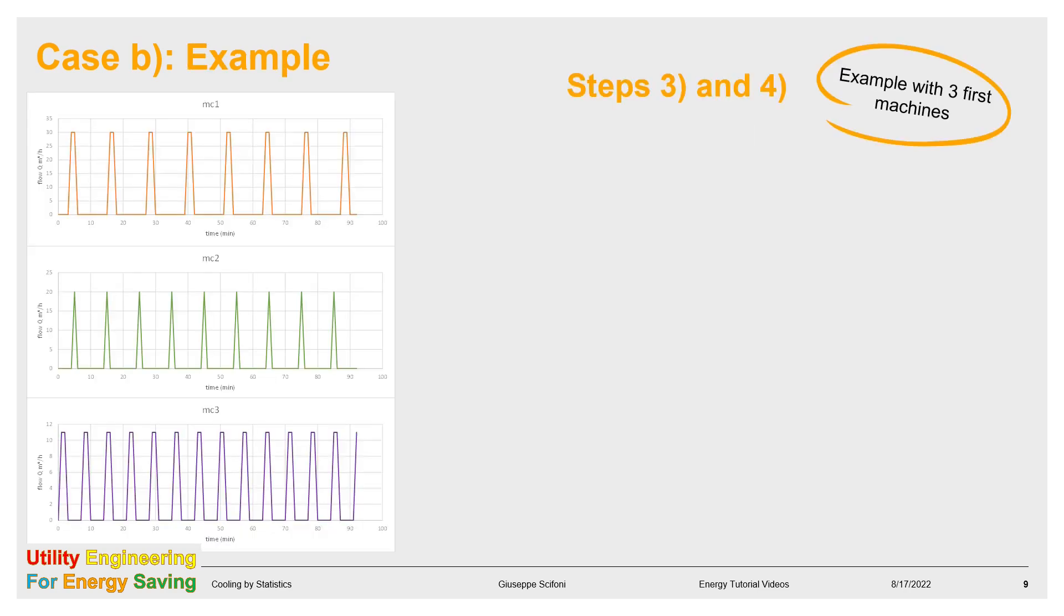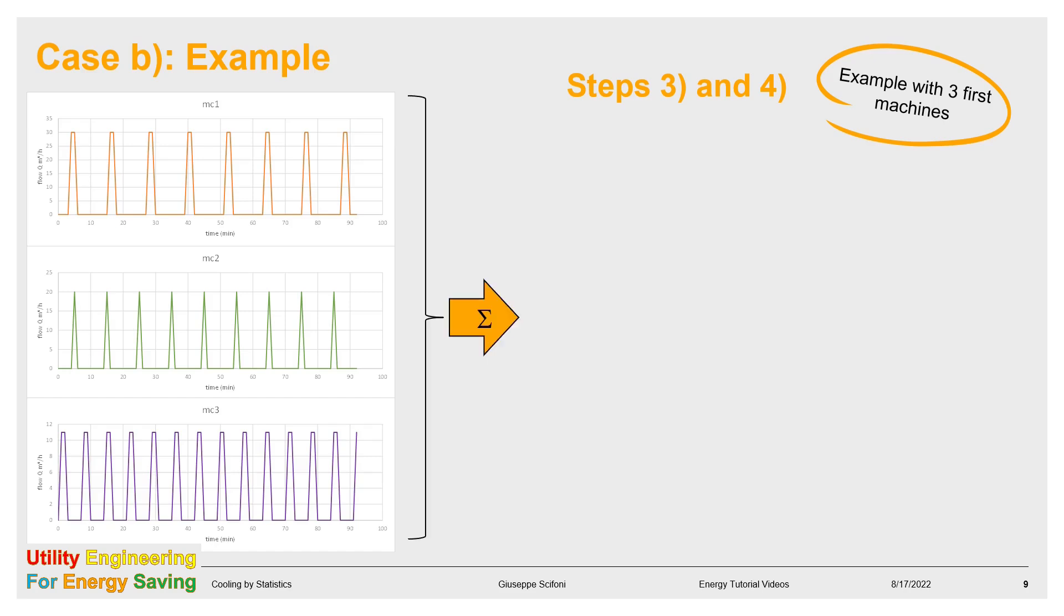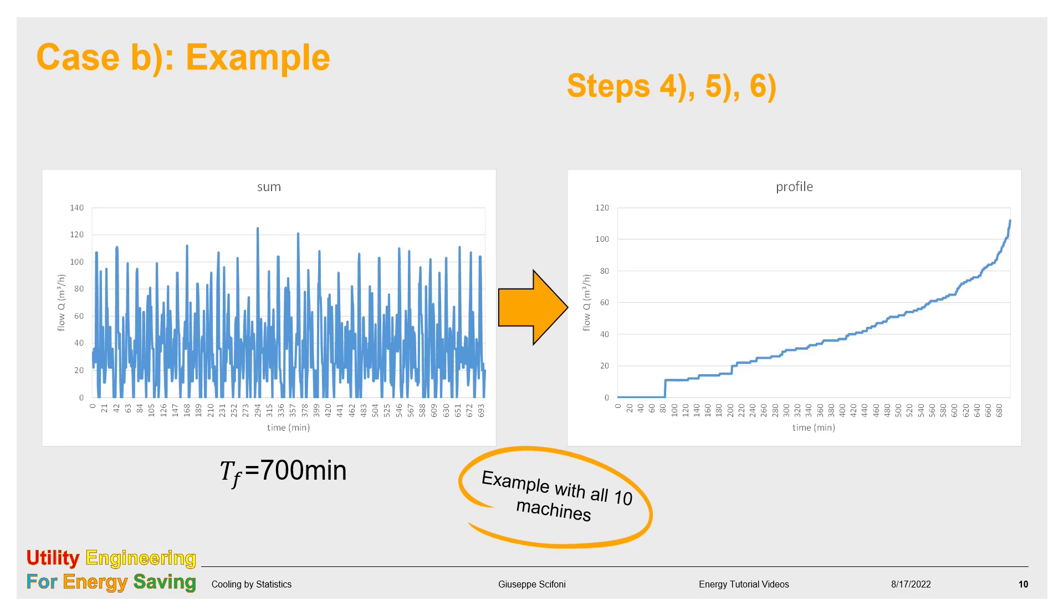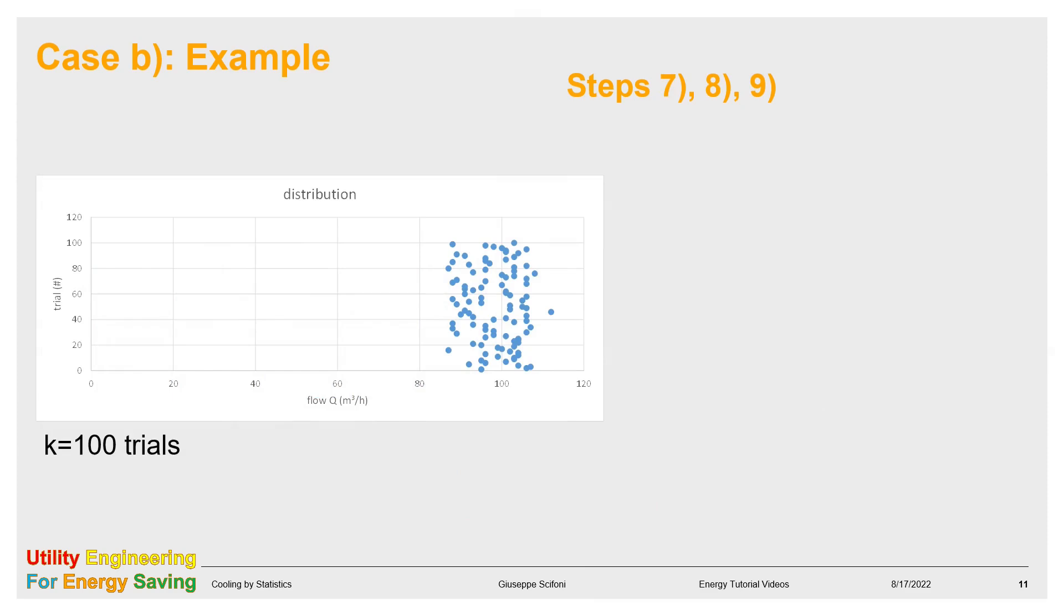Hereby the steps 3 and 4 from the above example, limited to the first 3 machines, to make the charts visible. Here the steps 4, 5, 6 with all 10 machines. From the sum, we generate the demand profile by sorting the value in ascent order. Then in the profile chart, we identify the 98% of the running time, and we find the corresponding flow, that is capital Q star. This procedure we have to repeat many times.